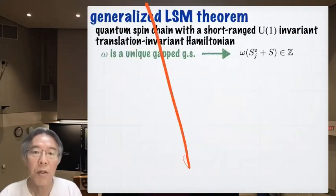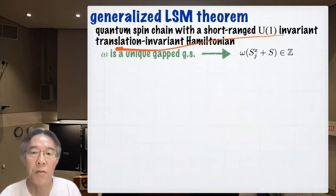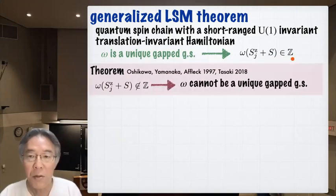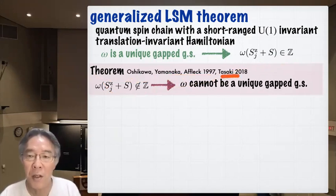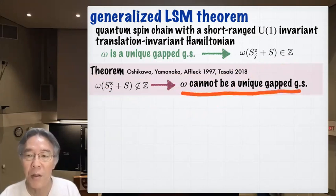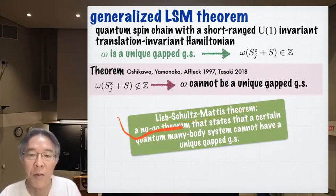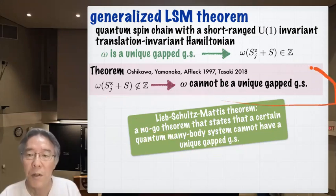What do we learn from this? For a quantum spin chain with a short-range, U(1) invariant, translation-invariant Hamiltonian, when omega is a unique gap ground state, the filling factor omega(S^z + S) equals the winding number and must be an integer. Taking the contrapositive gives this theorem due to Oshikawa, Yamanaka, and Affleck: when the filling factor is not an integer, omega cannot be a unique gap ground state. This is a Lieb-Schultz-Mattis type theorem — a no-go theorem stating that a certain quantum many-body system cannot have a unique gap ground state.